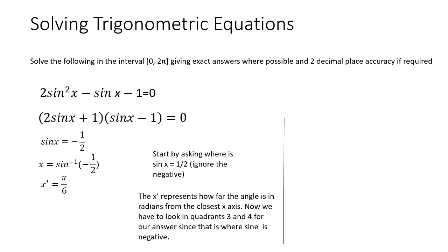I'm going to be deviating from the x-axis in quadrants 3 and 4 with an angle of pi over 6. To get pi over 6 into the third quadrant, that's pi plus pi over 6. To get pi over 6 into the fourth quadrant, that's 2 pi minus pi over 6. So the two answers are 7 pi over 6 and 11 pi over 6.